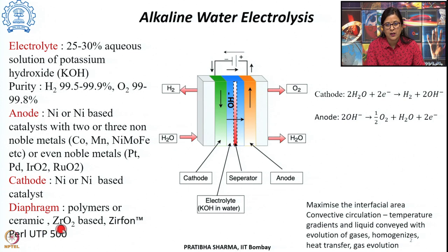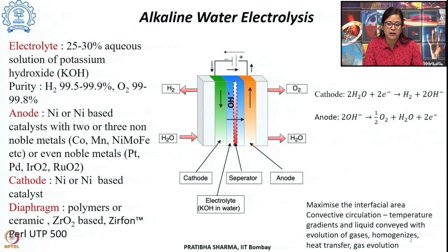Since electrochemical reactions take place at the interface, the interfacial area between the electrode and electrolyte needs to be maximized, achieved by using porous electrodes with several perforations. A convective circulation is established due to the temperature gradient and the liquid conveyed with gas evolution.